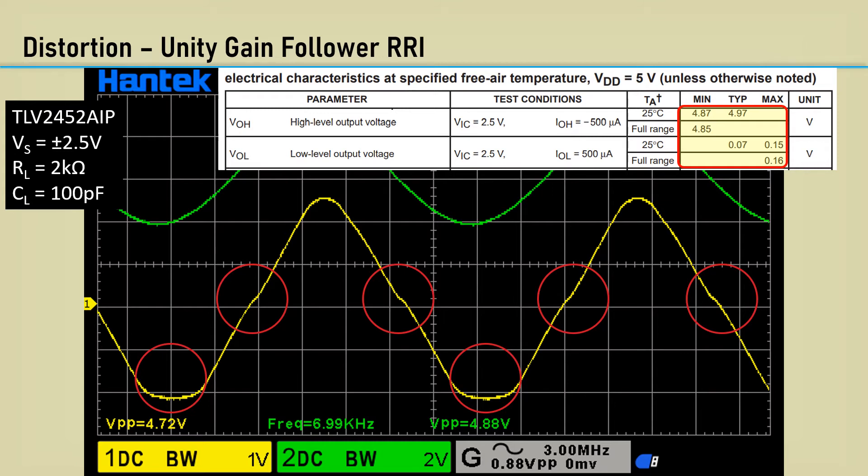Oftentimes, you just need to be able to have a common mode voltage to be near one rail or the other, and not both.